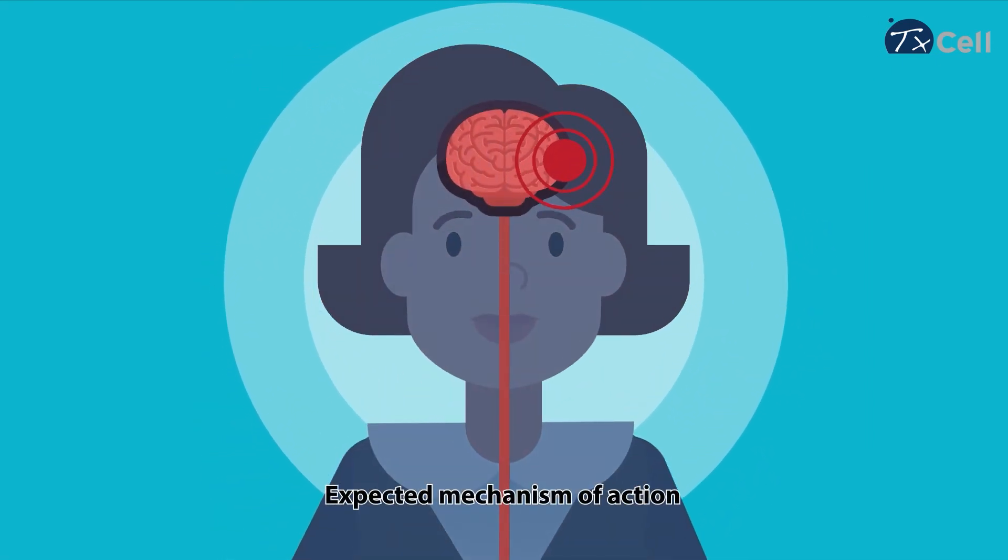Once inside the patient's body, CAR T-reg cells naturally migrate to the brain and reduce the inflammation in a local and specific way.